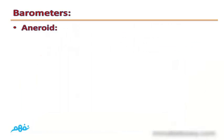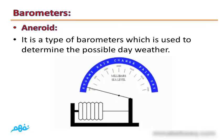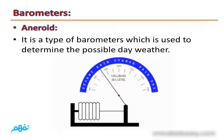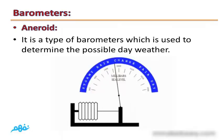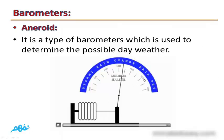There are many types of barometers; we will study two types. The first type is called the aneroid barometer, which is used to determine the possible day weather according to the change in pressure. The reading changes from stormy, rain, change, fair, or dry — these are the weather conditions.